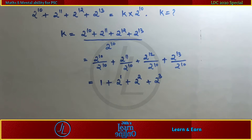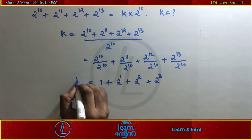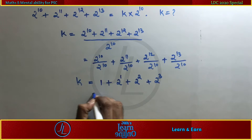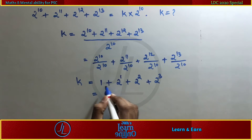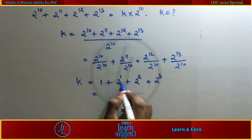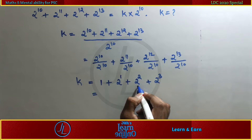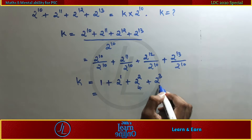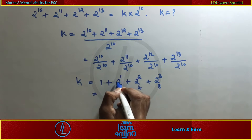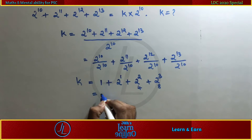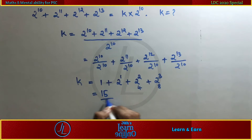Now the k value: k equals 1 plus 2 plus 2 squared which is 4, plus 2 cubed which is 8. So 1 plus 2 plus 4 plus 8 equals 15. We get k equal to 15.